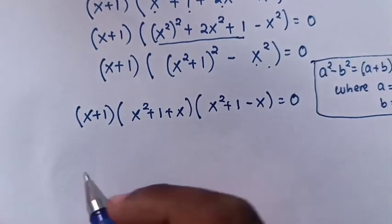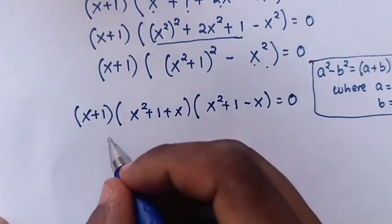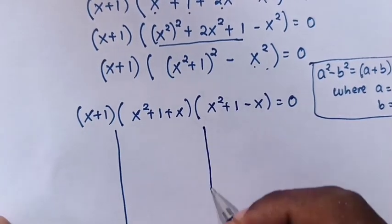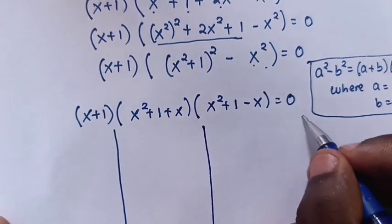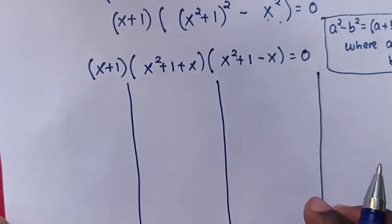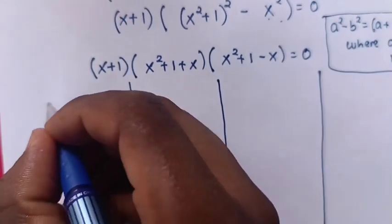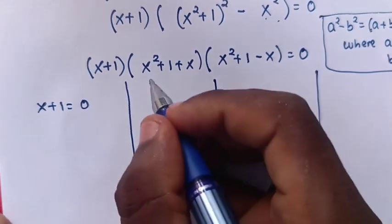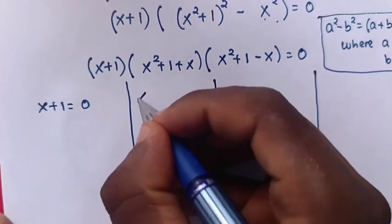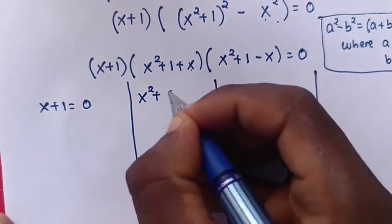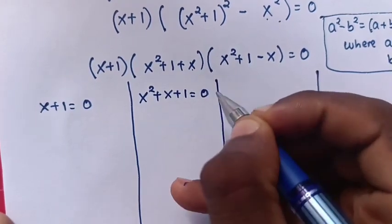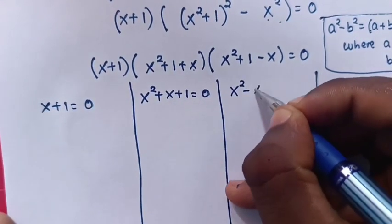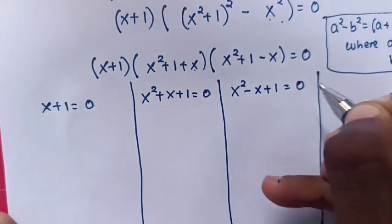So now we have three cases. We solve each case to find the values of x. Case 1: x + 1 = 0. Case 2: x² + x + 1 = 0. Case 3: x² − x + 1 = 0.